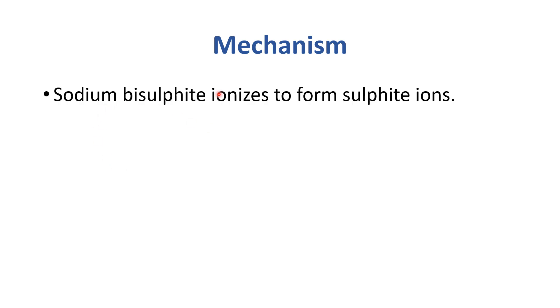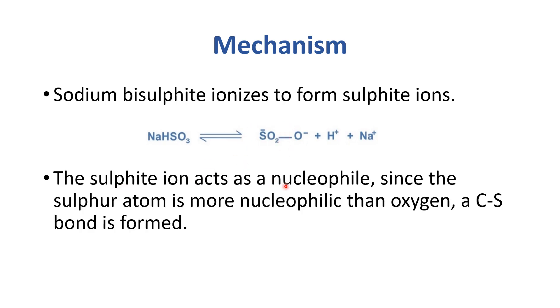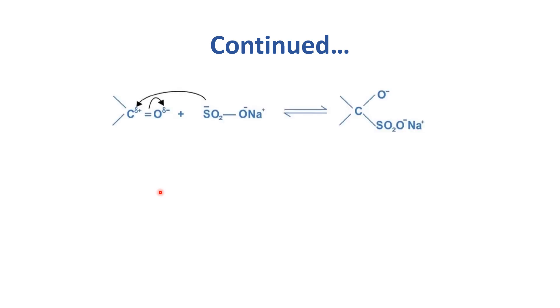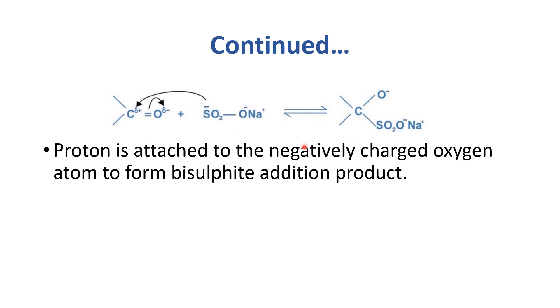Let's see its mechanism. Sodium bisulfite ionizes to form sulfite ions. Sodium is added, hydrogen is added and SO3 is SO2 with a bonded O. In this form, this will act as a nucleophile because sulfur is much more nucleophilic and this bond will become a C-S bond rather than a C-O bond. Here you can see this sulfite attacks on this carbonyl carbon and it will form an adduct. Proton is attached to the negatively charged oxygen atom to form bisulfite addition product.